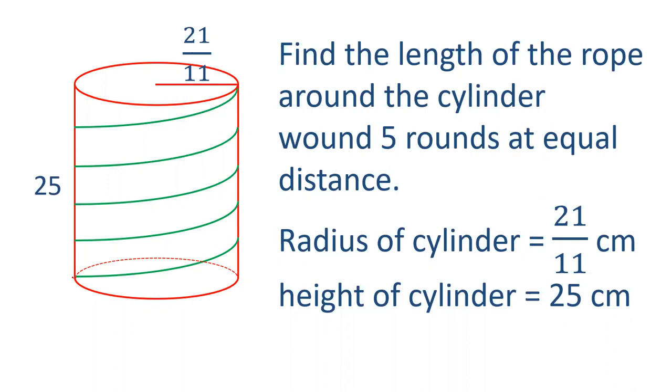Starting from the point at the bottom, it is wound around and finally reaches the other end of the diameter. So it is just opposite to this point and we have to find out the length of this. If the height is 25, the distance between this rope is equal on both sides. There are 5 equal parts and the radius is given as 21 by 11. Let's see how we can solve this question.